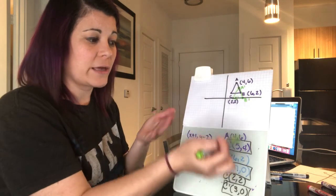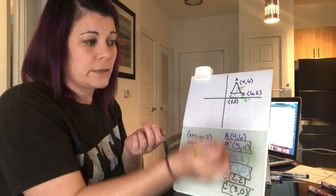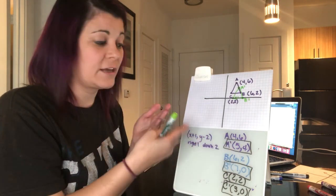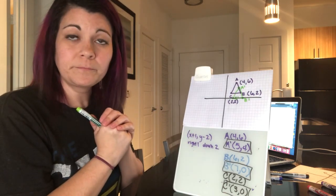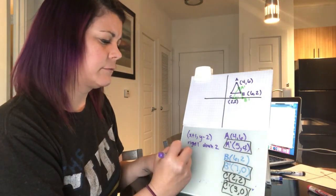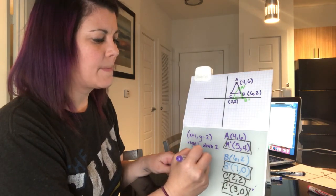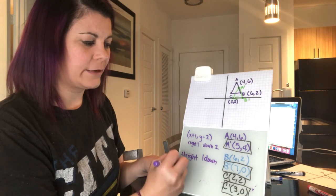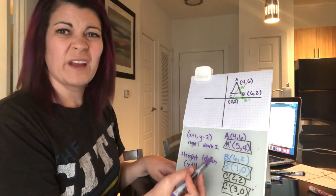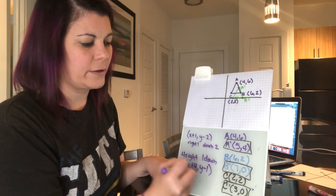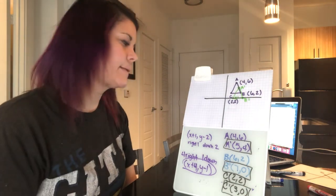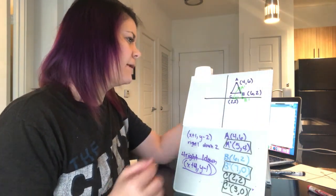Our drawing checks out, and we didn't even need to draw it first — we knew the translation rule. You can do it either way: draw first or find the coordinates from the rule. If it just says 'four right, one down,' you write that as (x + 4, y − 1). Four right means add four to x, and one down means subtract one from y. That's how you write your translation rule.